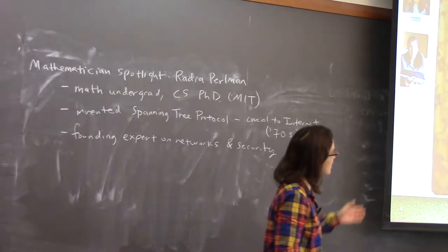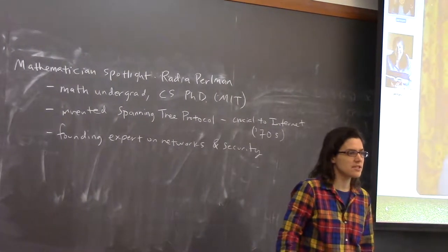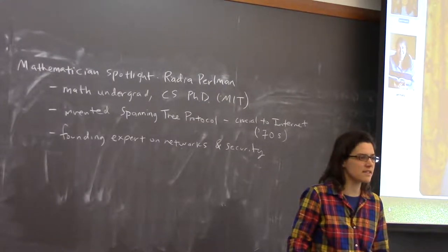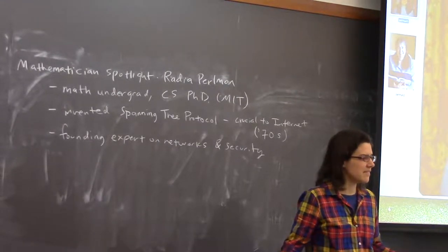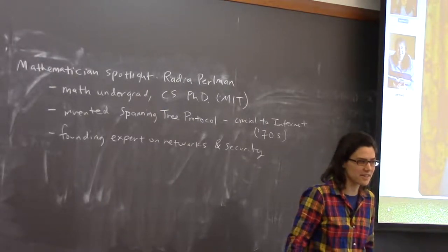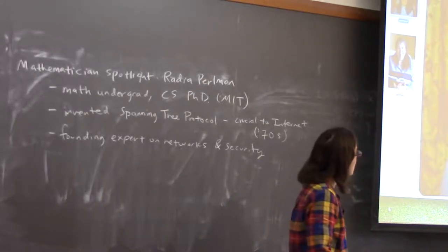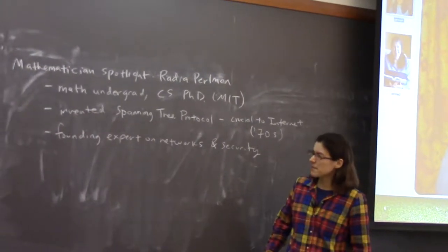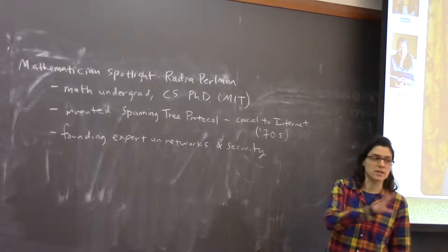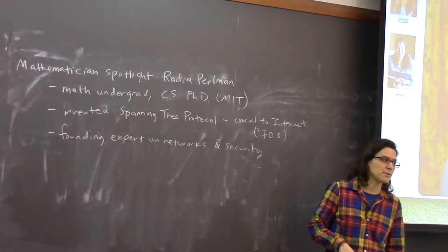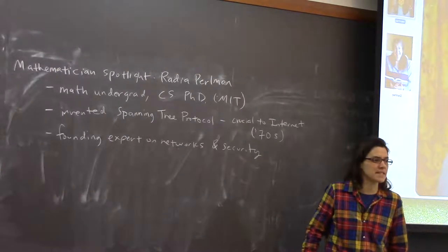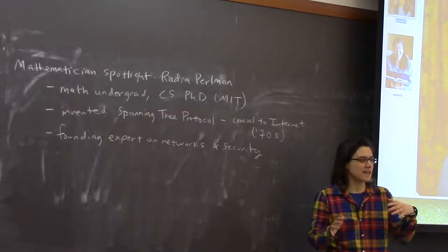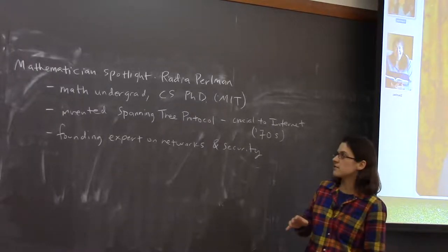Today our mathematician spotlight is Radia Perlman, by request. If any of you have a mathematician you'd like to request, please let me know — I'm very open to suggestions. At some point I think I'll run out of my favorite mathematicians. Radia Perlman was a math major in undergrad, then worked for a while, then came back and did a PhD in computer science, both at MIT. She was at MIT in the 70s when the number of female students there was capped at the size of one dormitory — about 50 students.